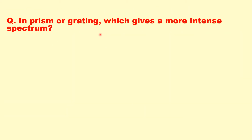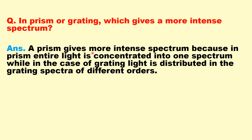In prism or grating, which gives the more intense spectrum? A prism gives a more intense spectrum because the entire light is concentrated into one spectrum. In a grating, light is distributed among spectra of different orders — zeroth, first, second, and so on. Since all intensity is focused in a single prism spectrum, the prism spectrum is more intense.